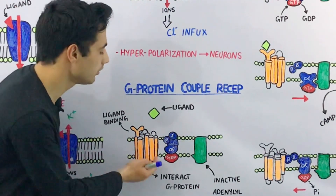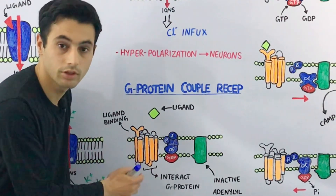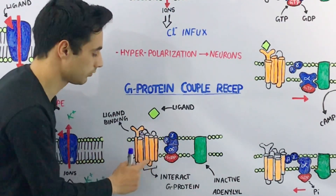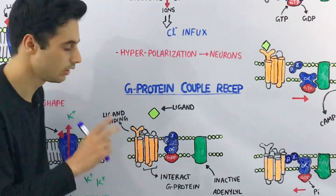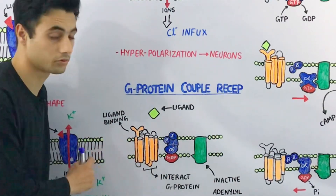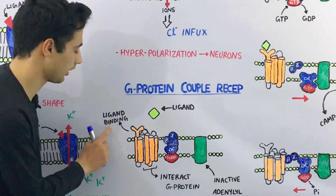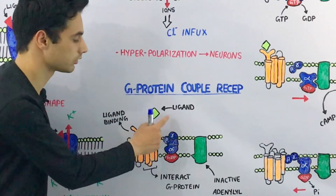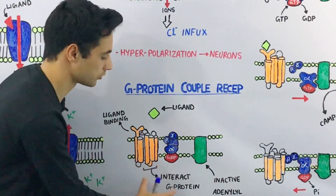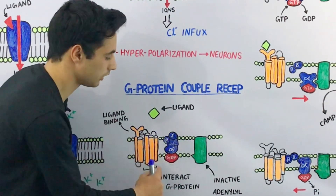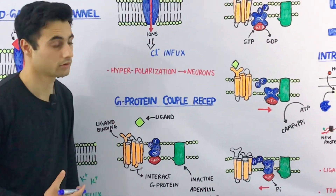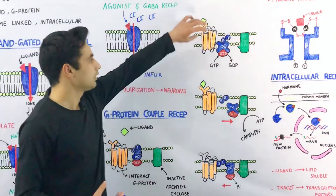This whole G-protein is linked with the coupled receptors called the G-protein coupled receptors. These are transmembrane proteins with seven turns inside and outside of the cell. This coupled receptor has two parts: the extracellular portion, which has the ligand binding site onto which the ligand will bind, and the intracellular portion, which will interact with the G-protein and perform the physiological and biochemical reaction.